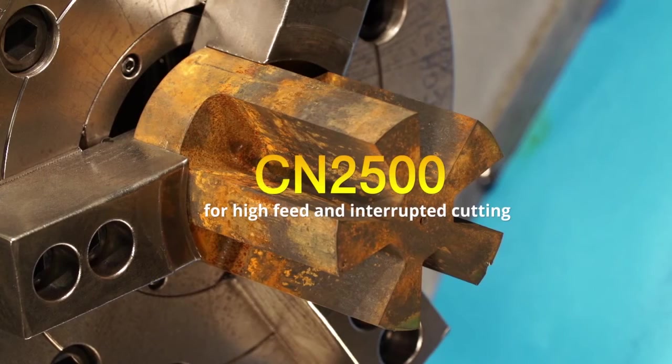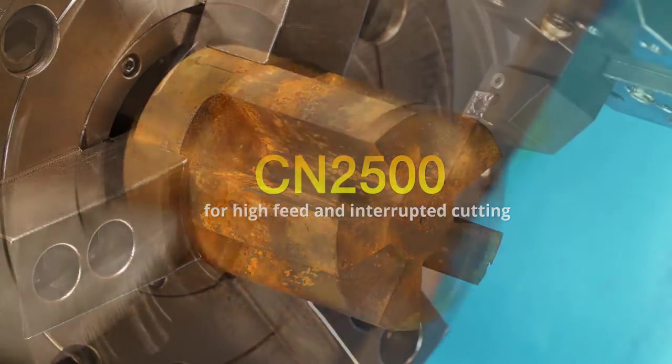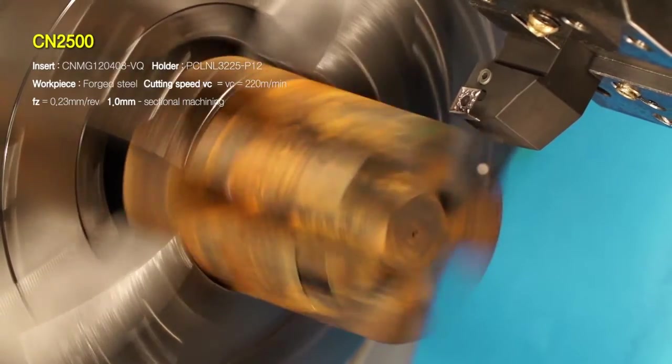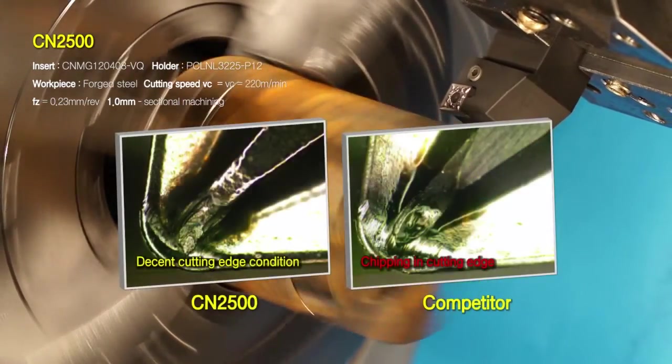CN2500 for high feed and interrupted cutting can significantly reduce chipping and damage when machining workpieces that have high interruption. CN2500 is highlighted by its integrity.